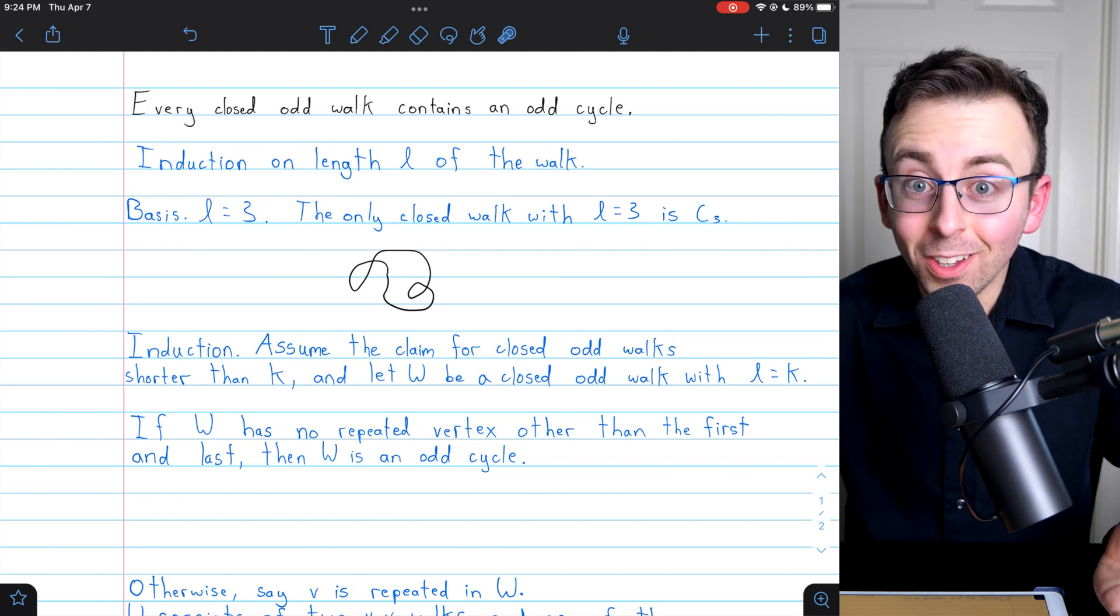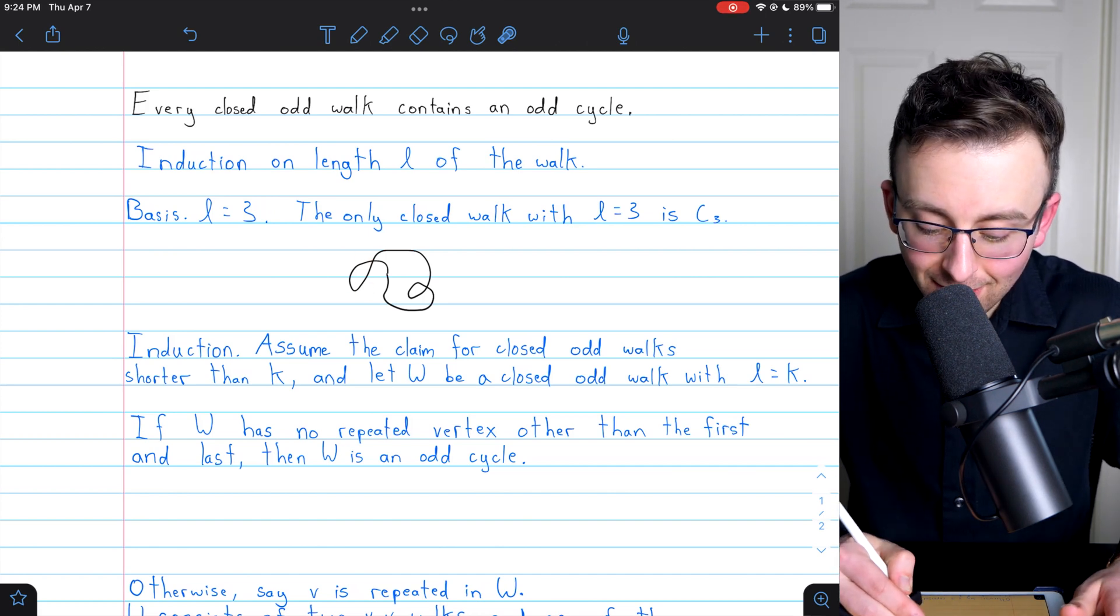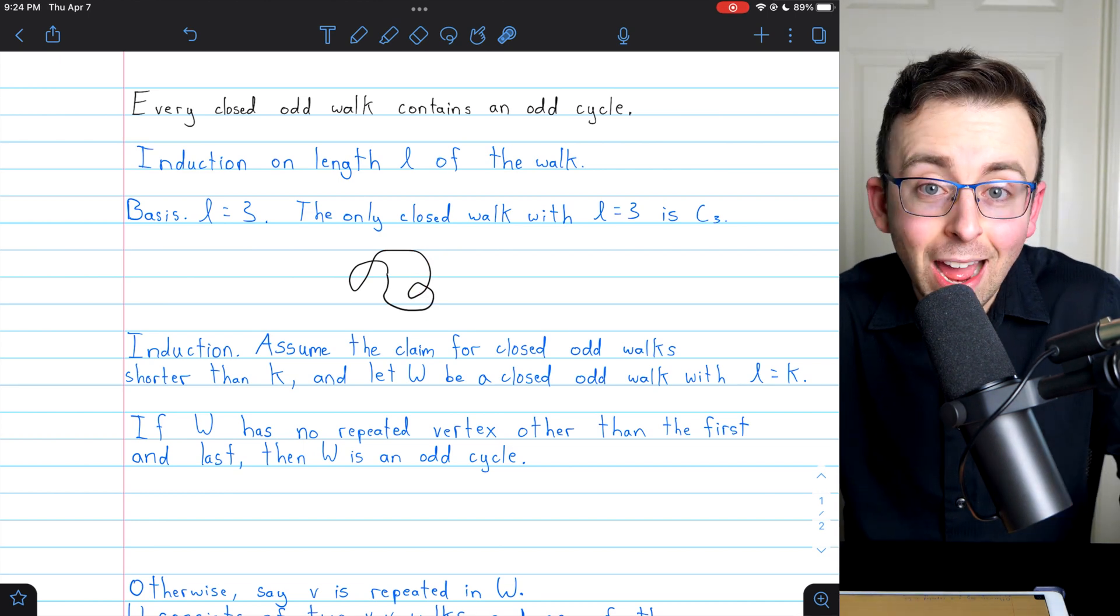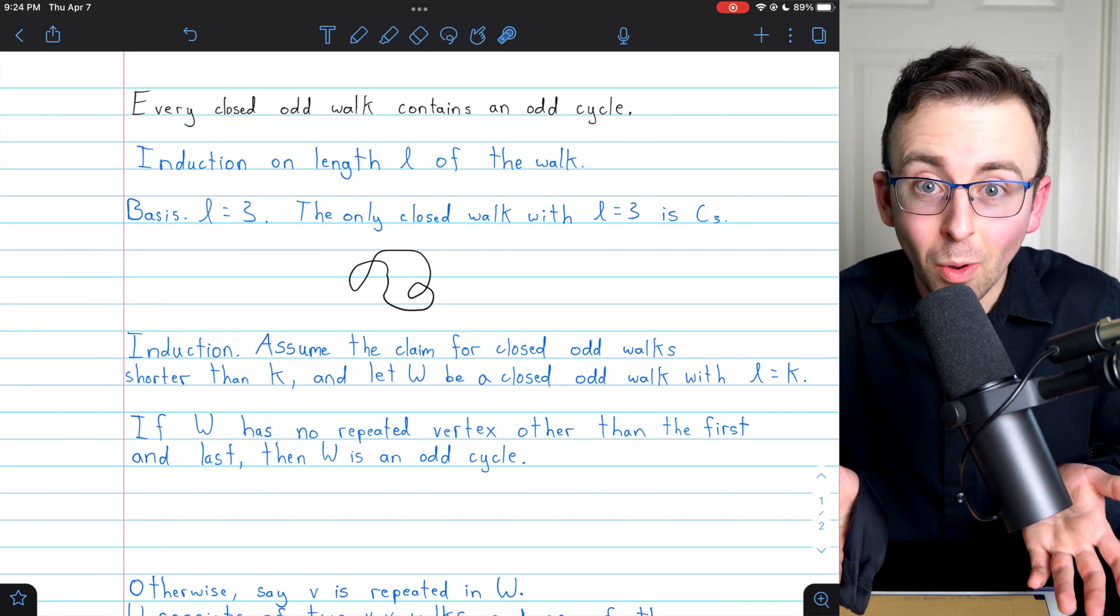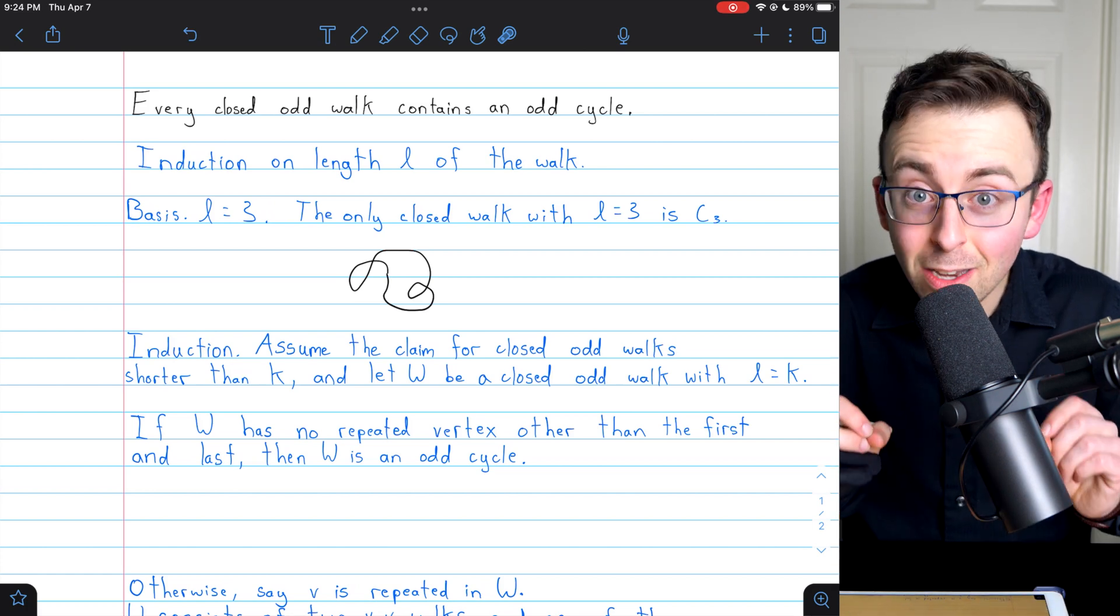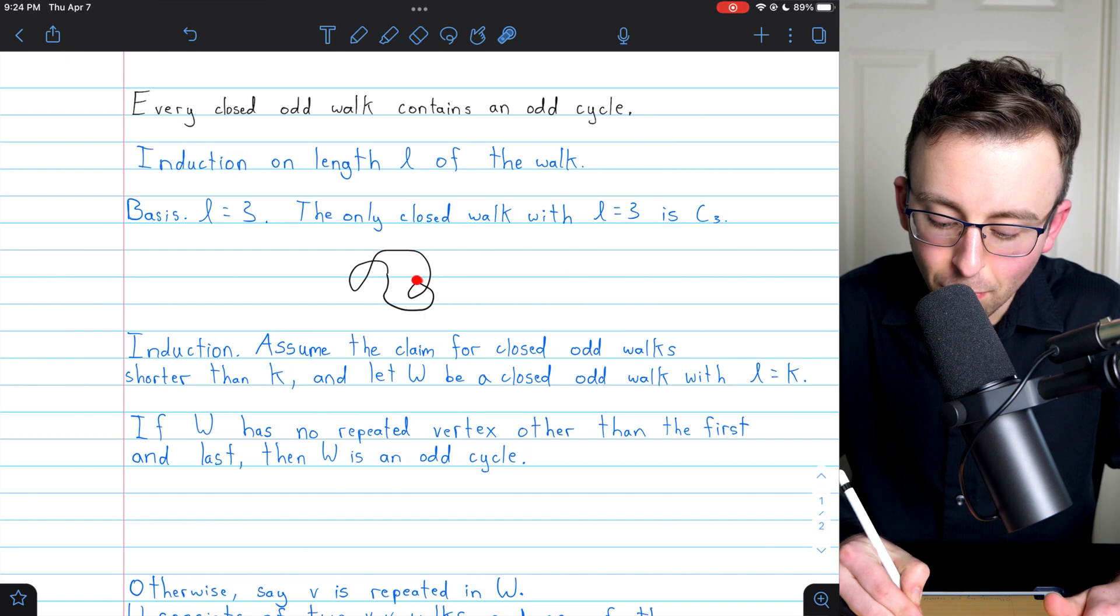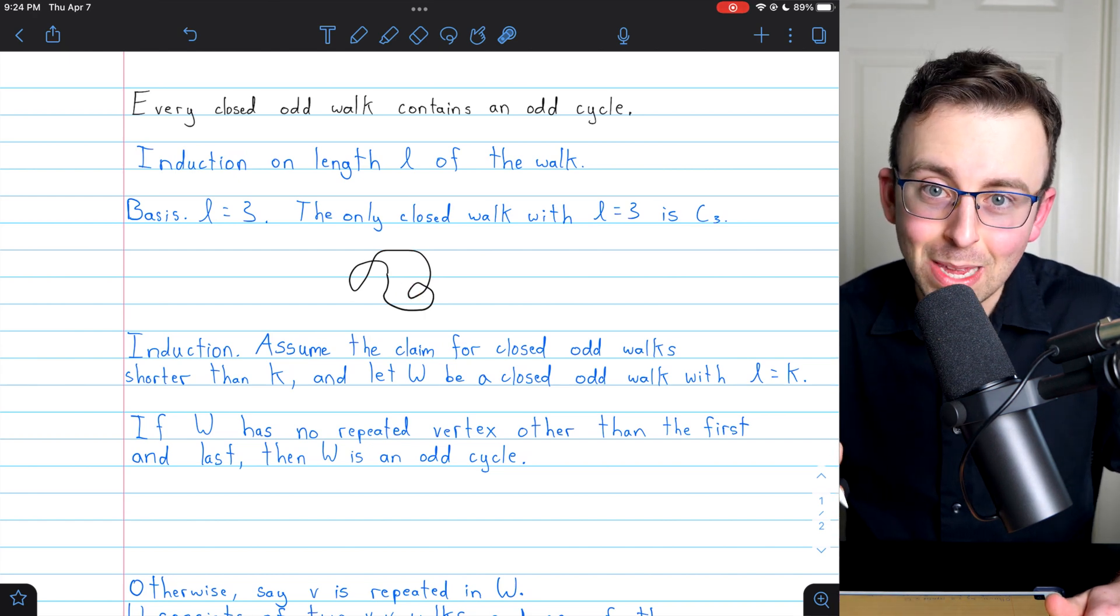If they were all even, then since they make up the whole walk, the whole walk would have to be even. But we're saying the walk is odd. So for it to be odd, at least one of the cycles that it can be broken into has to be odd.